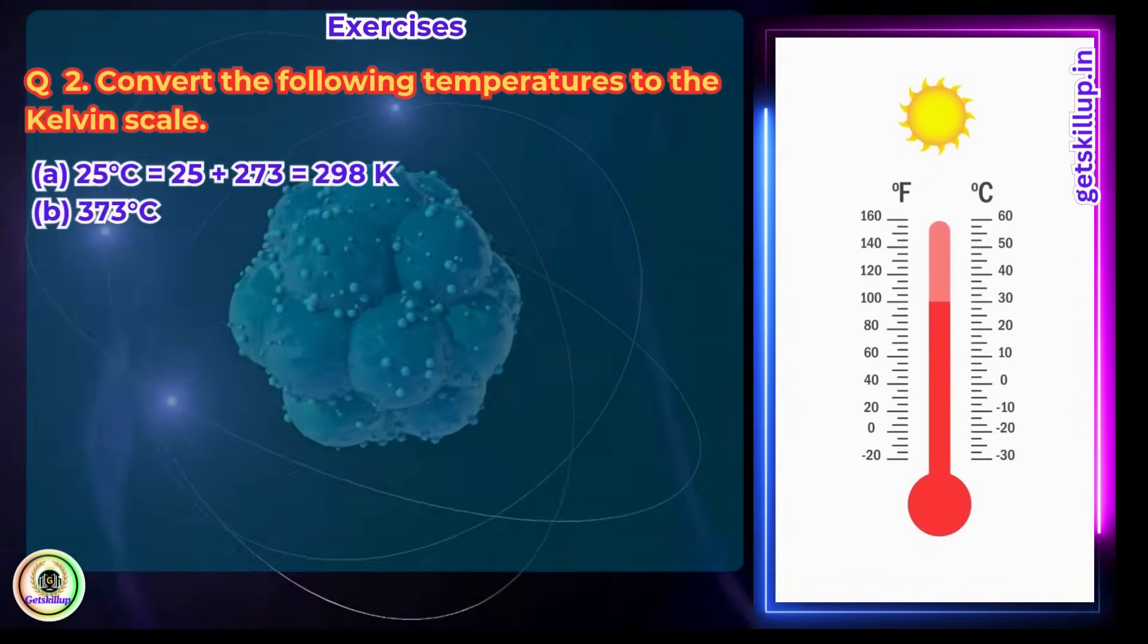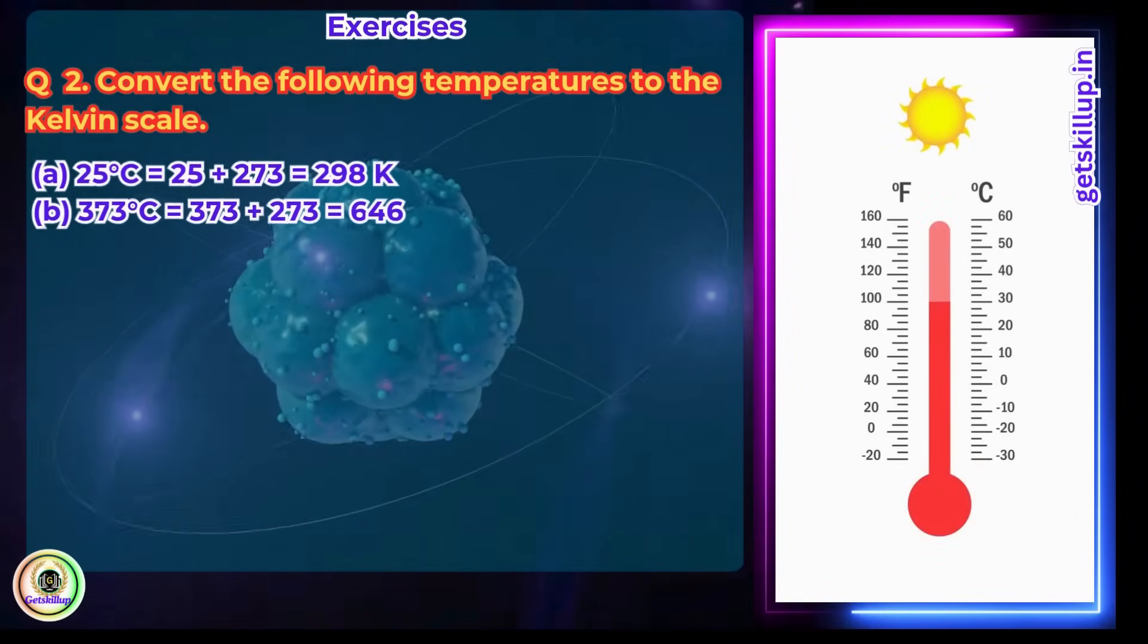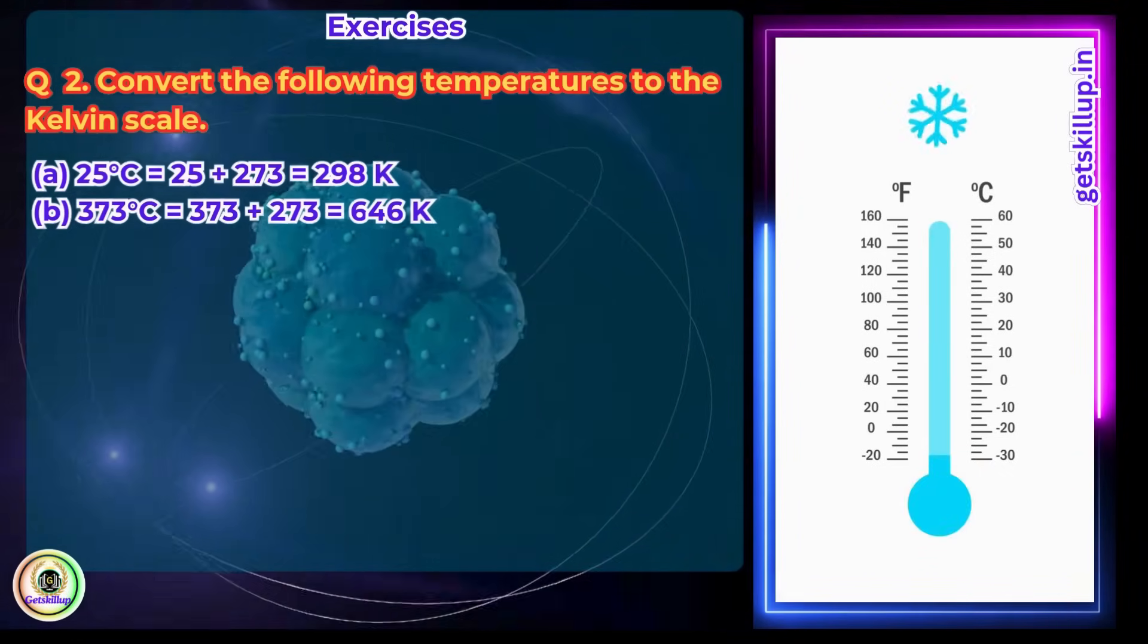b. 373 degrees Celsius. Answer: 373 degrees Celsius equals 373 plus 273, which is equal to 646 Kelvin.